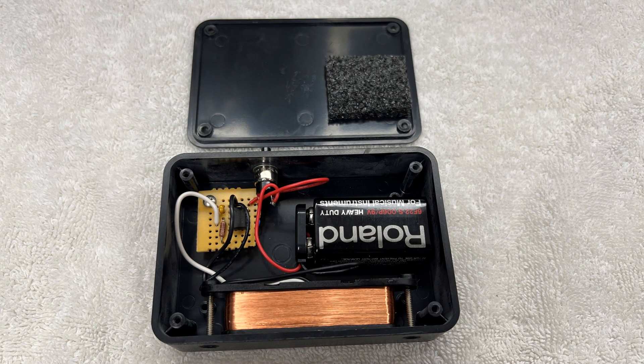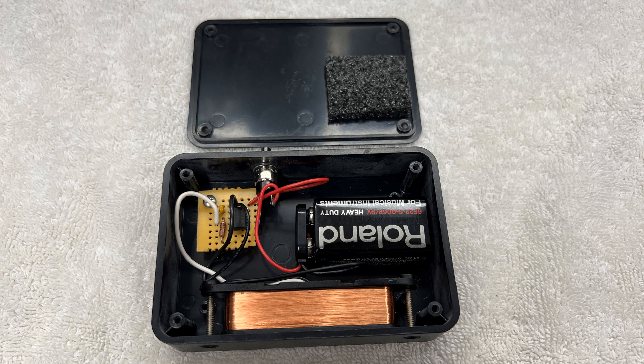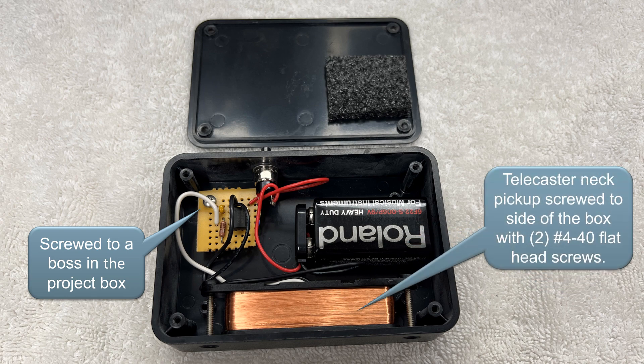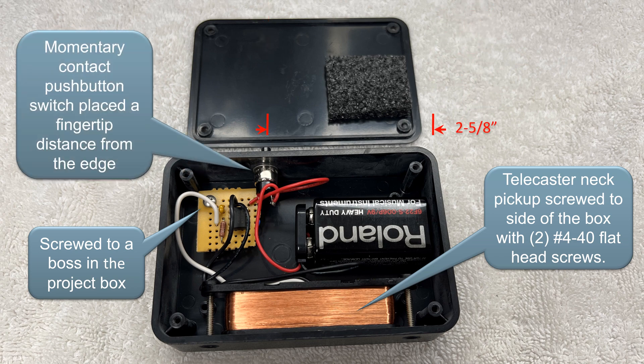Here's a picture of the inside of the box. I put a link in the description to the project box I used. It seems to be the perfect size. I screwed the circuit board into one of the four boss features in the bottom of the box. The Telecaster pickup with pole pieces removed was screwed to the side of the box with two number 440 flathead machine screws. The momentary contact push button switch was placed a fingertip distance from the edge.